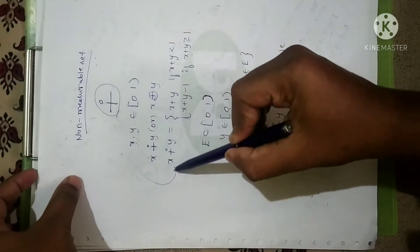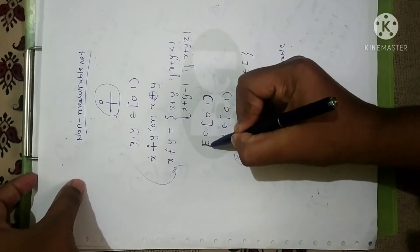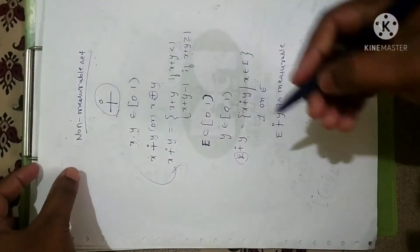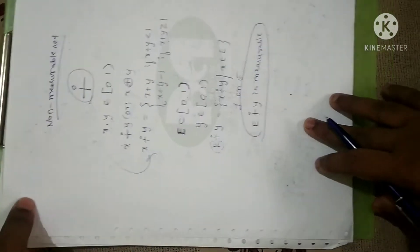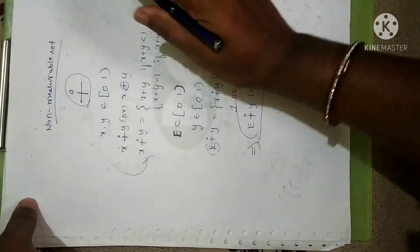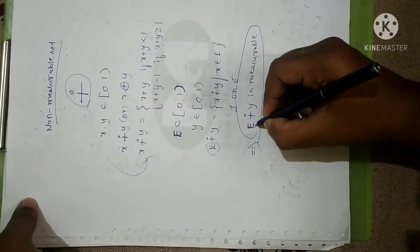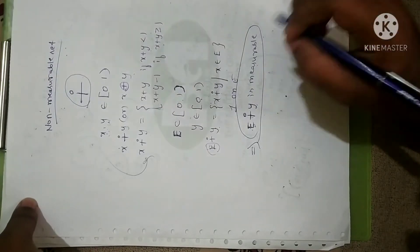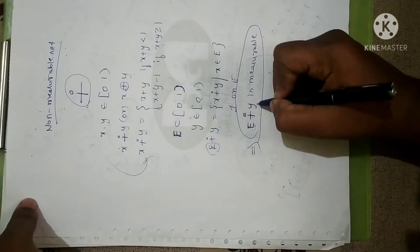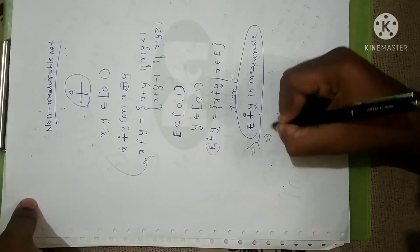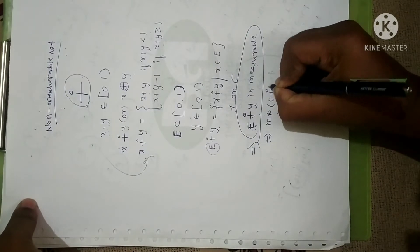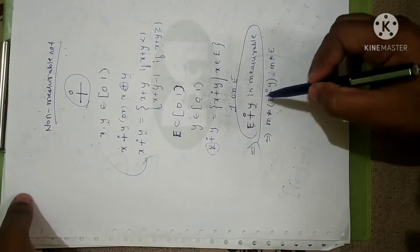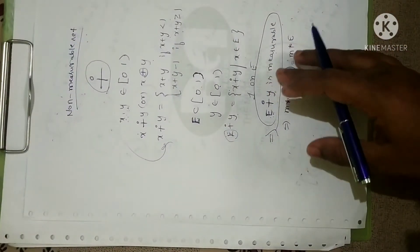One of the examples for a non-measurable set is defined like this. Now, if you consider an open set E contained in [0,1), we can form a measurable set. Translation modulo with open set E and element y is measurable, and thereby m*(E ⊕ y) equals m*(E). You should remember these two properties.